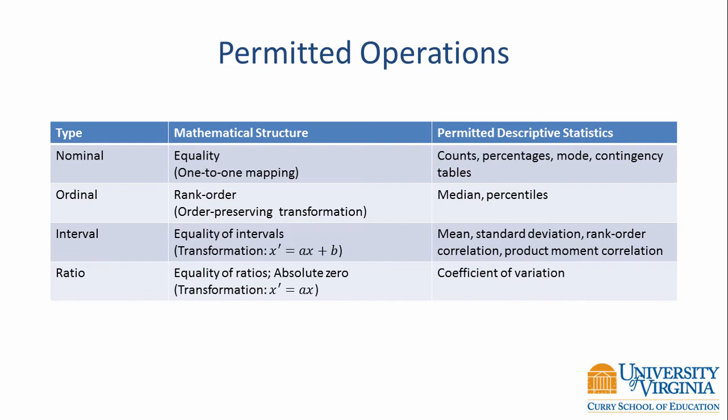For ordinal data, any order-preserving transformation is acceptable. When summarizing ordinal data, permitted statistics include the median and percentiles, in addition to those listed for nominal variables. For interval data, linear transformations are permissible. Summary statistics for interval data include the mean, standard deviation, and correlations. We could also use the median and percentiles.